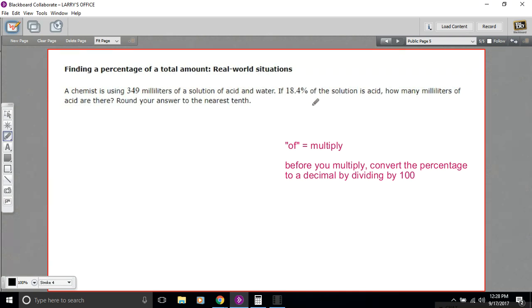We're told it's 18.4%. So what we want is 18.4% of this solution, which is 349. So of here means multiply. So this problem is just 18.4% times 349.